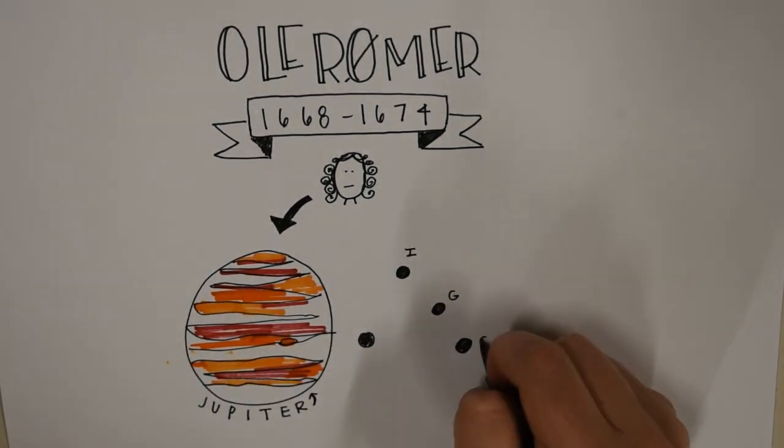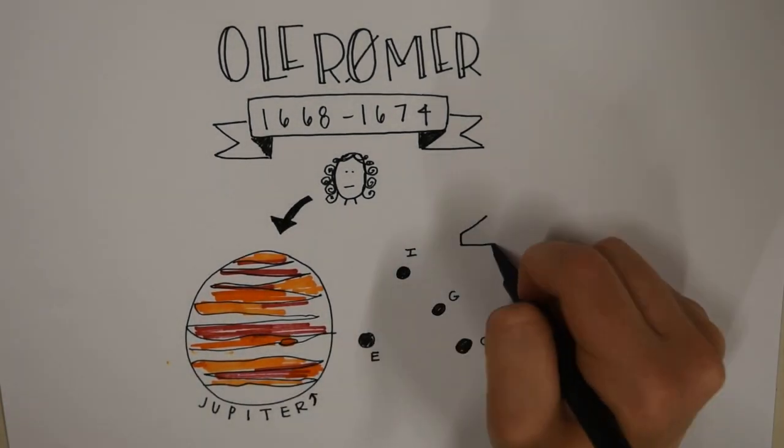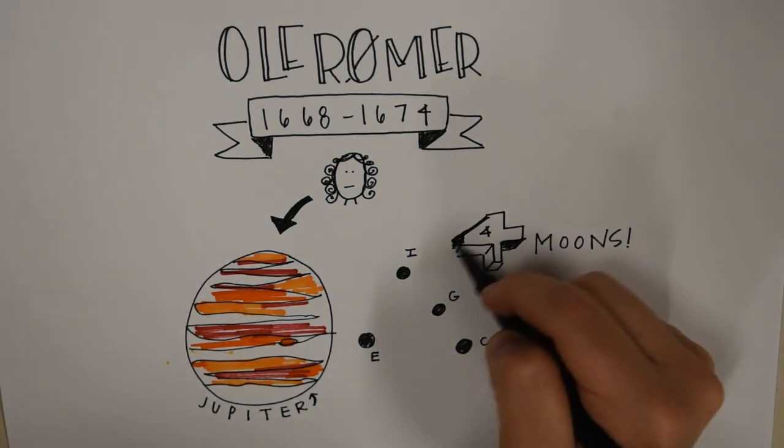First he calculated the periods of Jupiter's moons: Io, Ganymede, Callisto, and Europa.